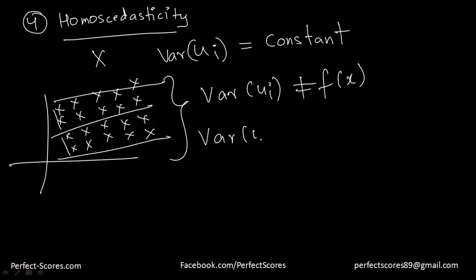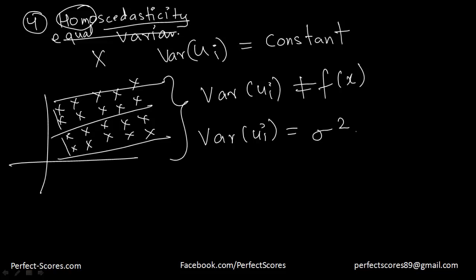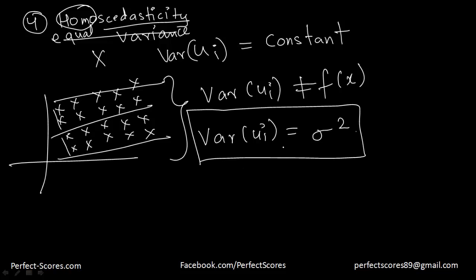The variance of the error term is denoted by a constant expression. The word 'homo' means equal and 'scedasticity' represents equal variance or spread — so homoscedasticity means equal variance throughout. We'll do a lot more on homoscedasticity in detail later. For now, it means the variance of the error term is going to be a constant and is not going to vary with respect to x.